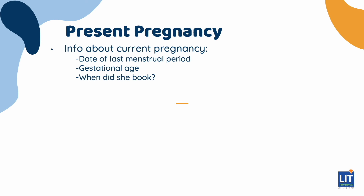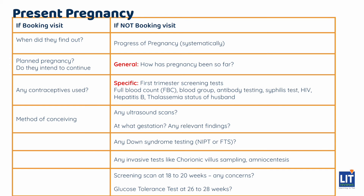Next, we need to find out all about the current pregnancy, which includes the date of her last menstrual period to determine the gestational age and when she booked. If this is a booking visit history, we can follow up by asking how did they find out about the pregnancy, was this a planned pregnancy, and if not planned, whether they intend to continue. We can also explore any contraceptives that were used and provide education on correct contraceptive methods. We should also ask how they conceived, whether by natural methods or through subfertility treatments, followed by a congratulations to the mother or couple.